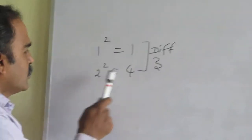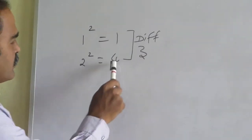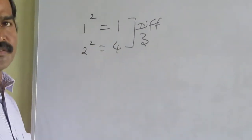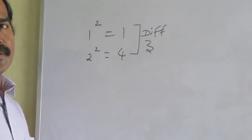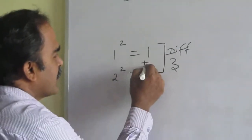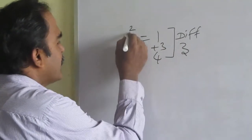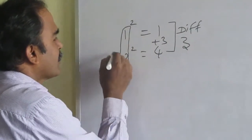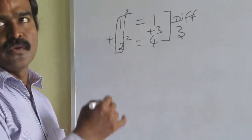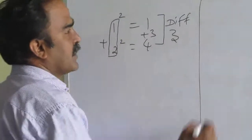1 square is 1, 2 square is 4. When you observe the difference, 4 minus 1, the difference is 3. Do you know how this number is increased by 3 more? Add the base number here. What is 1 plus 2? 3. So, like that, it happens.